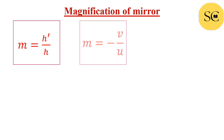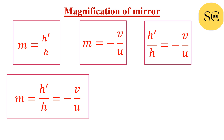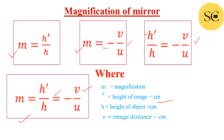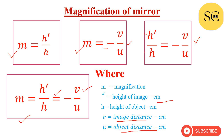Next formula — magnification of mirror. We have four formulas: M = H'/H; M = -V/U; H'/H = -V/U; and M = H' = -V/U. According to the given values, we can use one formula out of the four. Where M is magnification, H' is height of image (unit: centimeter), H is height of object (unit: centimeter), V is image distance, and U is object distance.